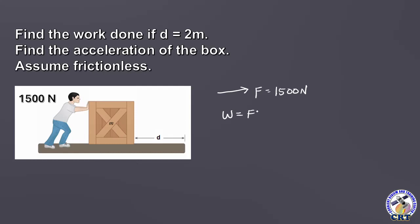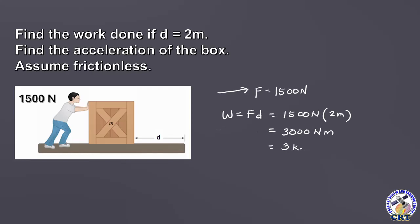Simply, the work done is force times the distance involved. So we have 1,500 newtons multiplied by the distance 2 meters. So this is 3,000 newton-meter. And we can convert 3,000 to 3 kilo. The unit newton-meter, since this is the unit for work, it is appropriate to use the unit joules. So for our answer, the work is equivalent to 3 kilojoules.